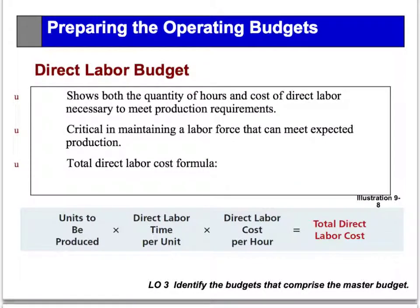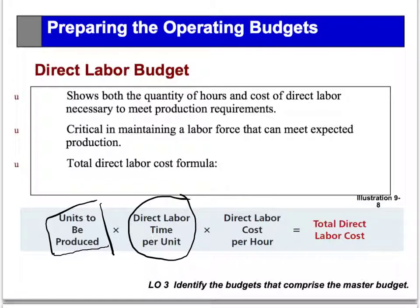Next, we look at the direct labor budget. This is quite simple — you can't inventory labor. So we don't have that problem of beginning and ending inventory or management's policy. We simply have to take from the production budget the number of units to be produced, multiply that by the direct labor time to produce one unit, and when we get the hours, we multiply it by the cost. It's as simple as that.